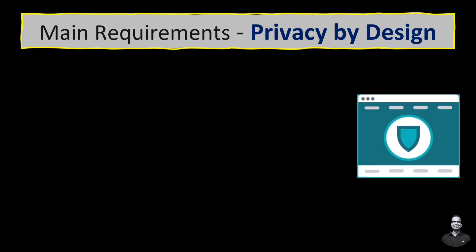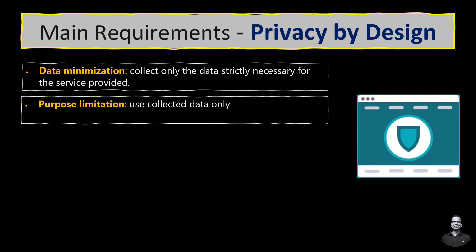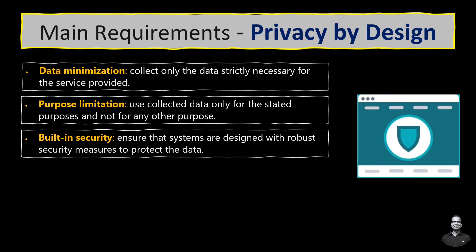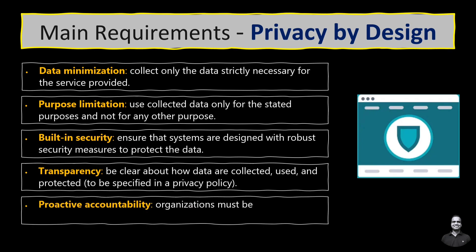What are the main requirements of privacy by design? These include: data minimization — collect only the data which is strictly necessary for the service provided; purpose limitation — use collected data only for the stated purposes; built-in security — ensure that systems are designed with robust security measures to protect the data; transparency — be clear about how data is collected, used, and protected, as specified in a privacy policy; and proactive accountability — organizations must be proactive in preventing privacy risks.